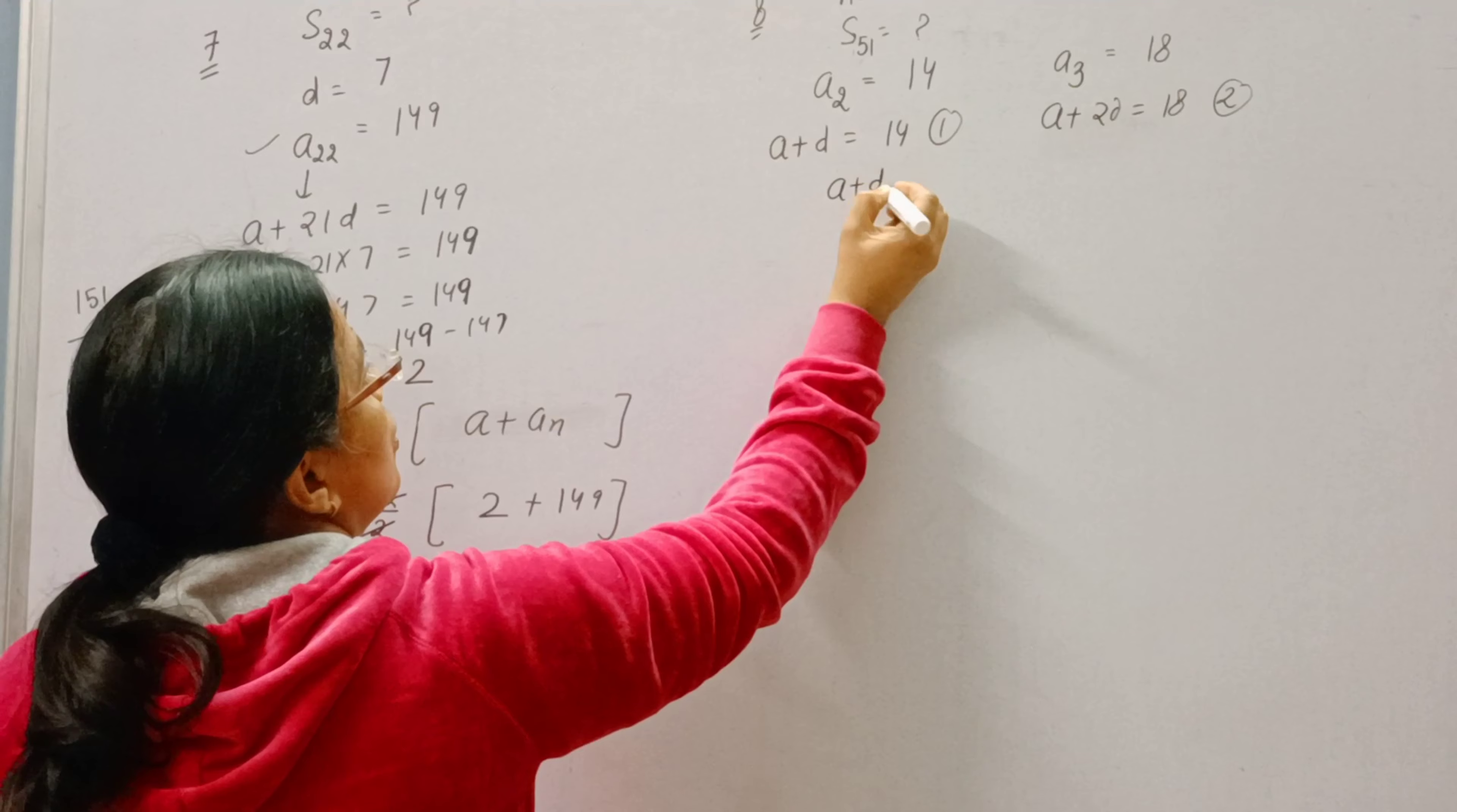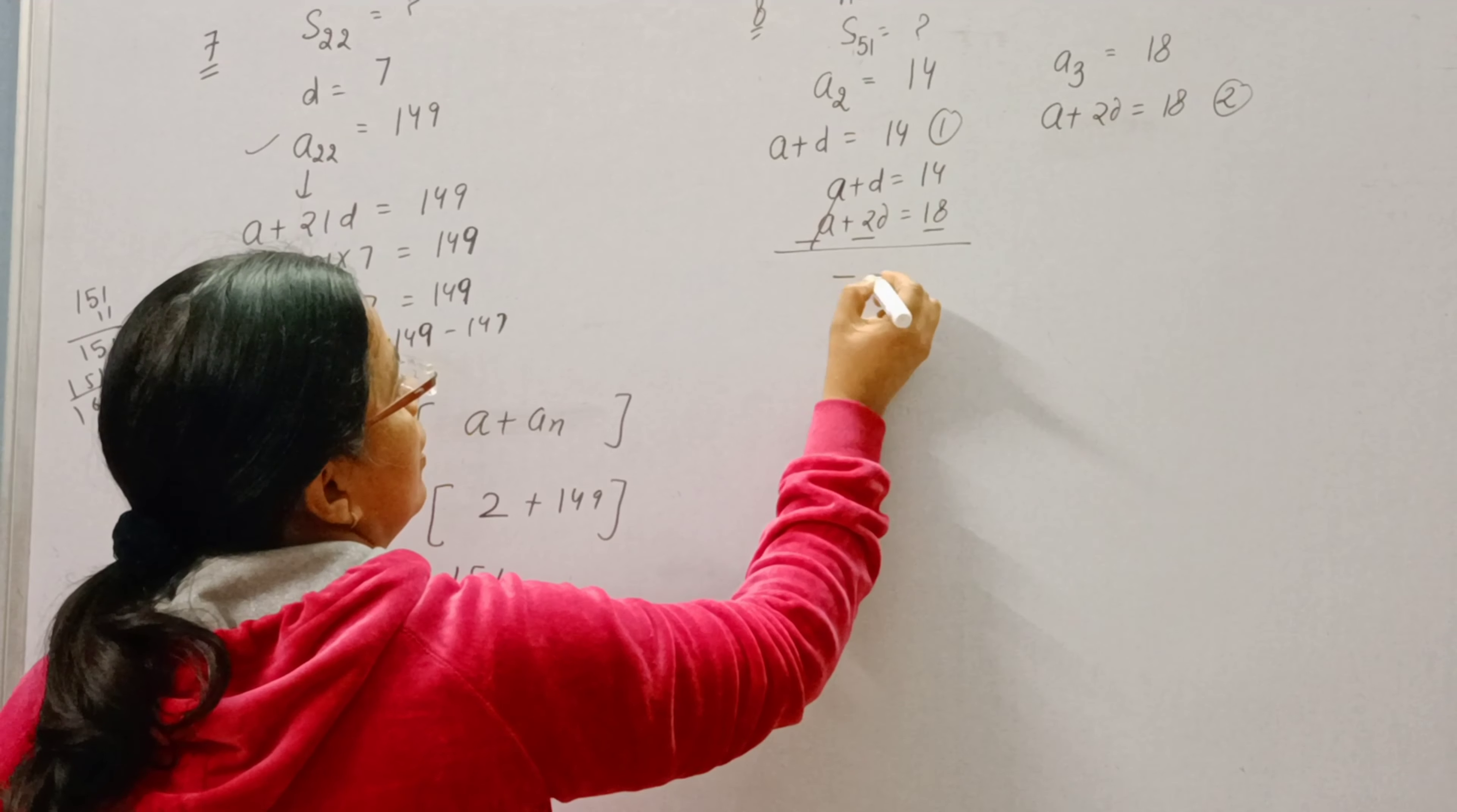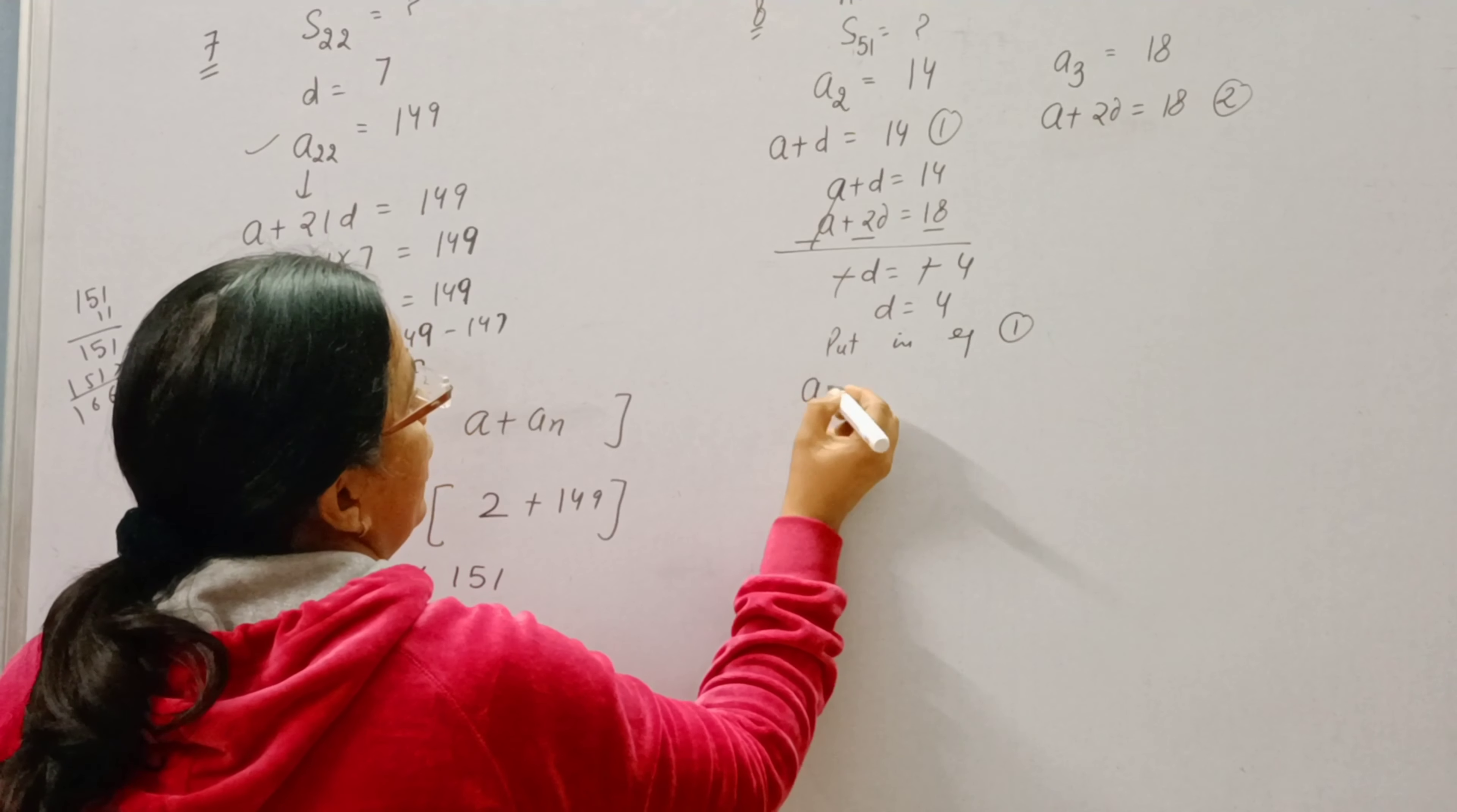Now we can solve these two equations by the method of elimination and then we can find the value of A and D. So D is 4. Put the value of D in equation 1, so A plus 4 is equal to 14. A will come 14 minus 4 is equal to 10.